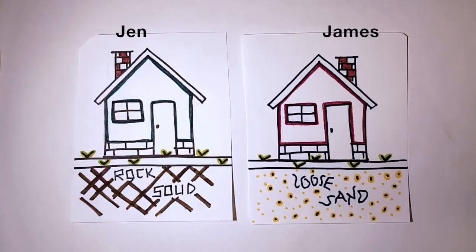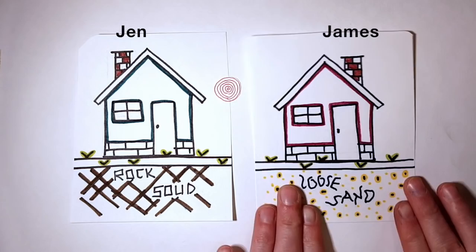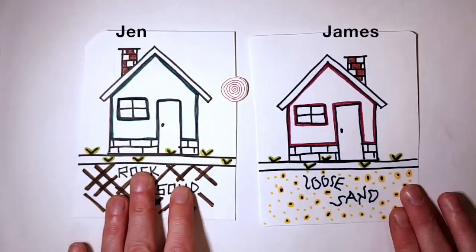If an earthquake hits, James' home, which sits on unconsolidated or loose sediment, will shake more than the solid rock Jen's house sits on. This also means James will have more damage to his home and neighborhood.